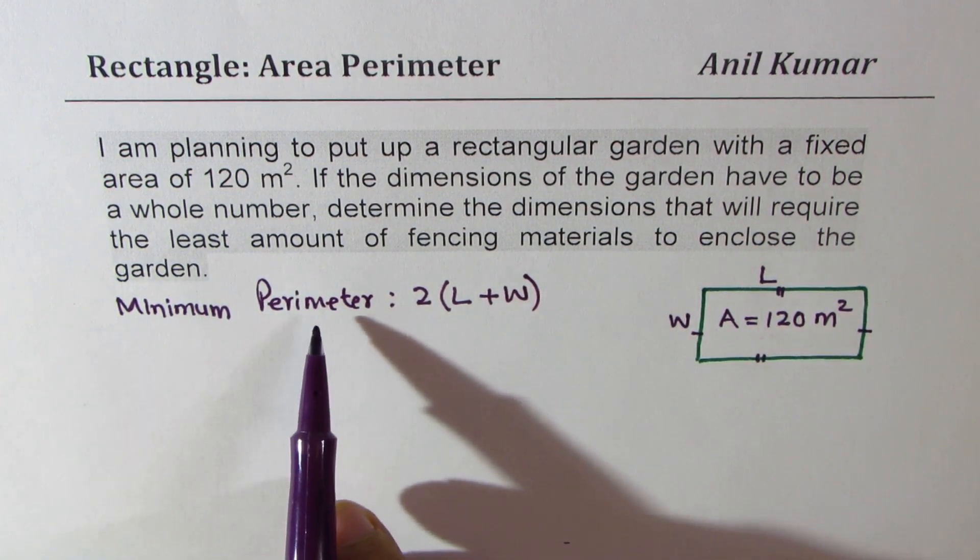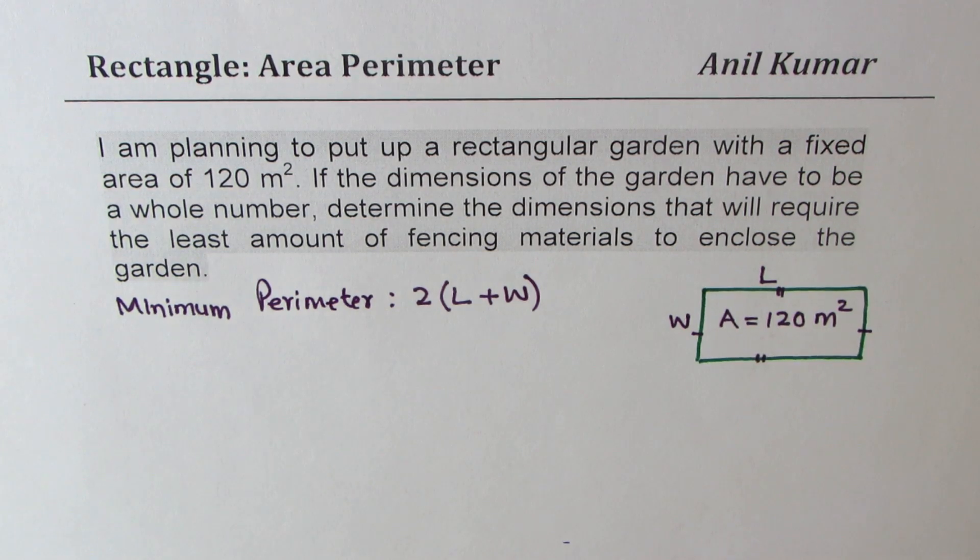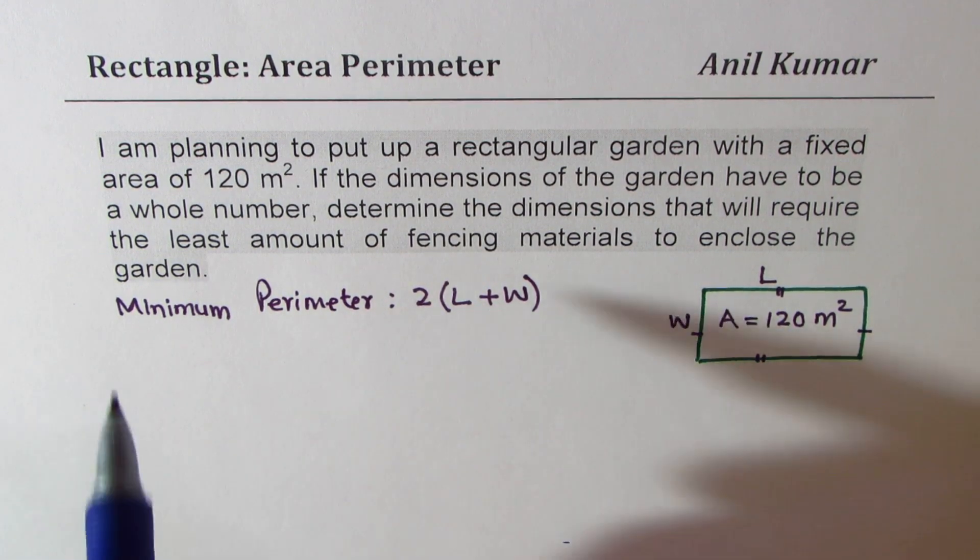So least perimeter also means that combination of length and width is also minimum, right? How can we solve this question? Since we are given that we are to only work with whole numbers, since we have to work only with the whole numbers,